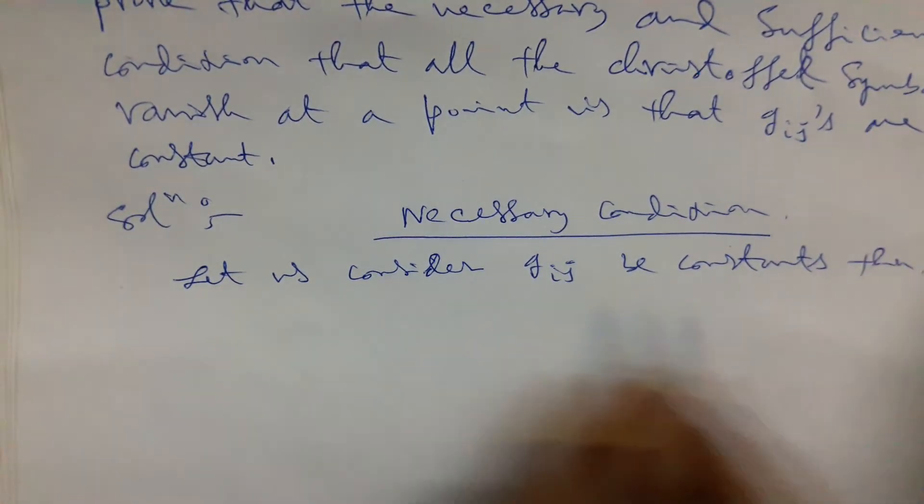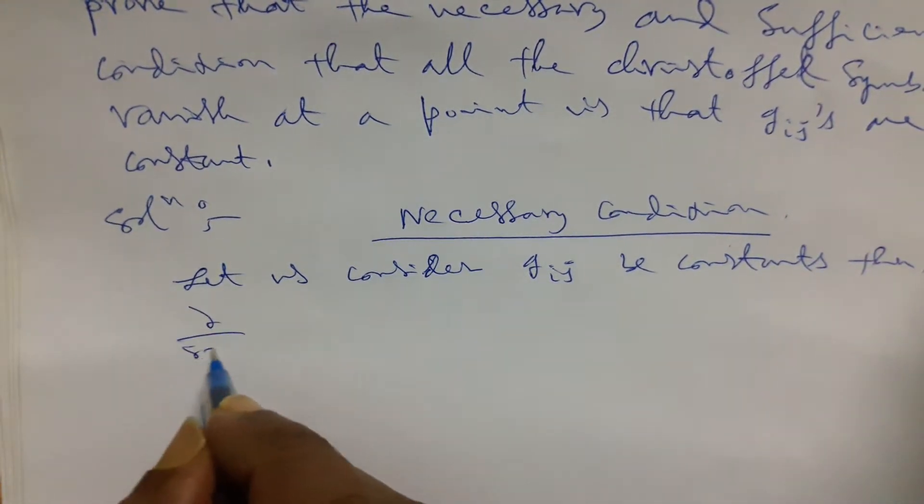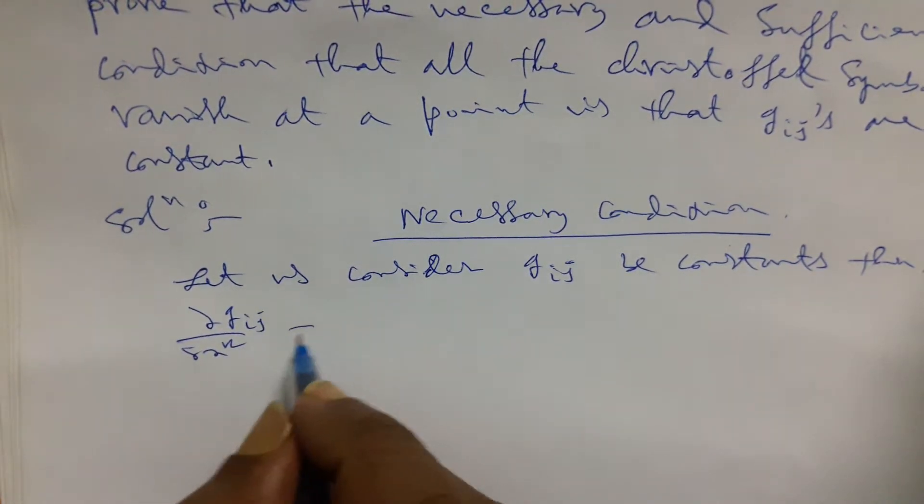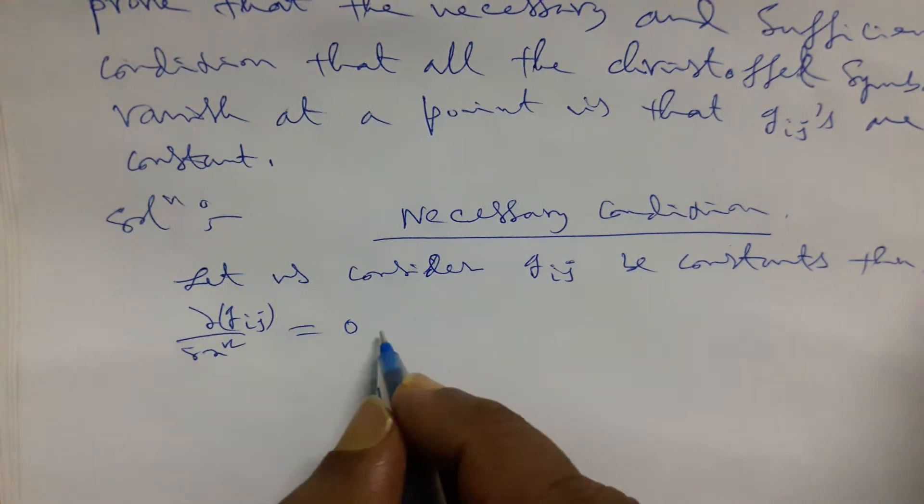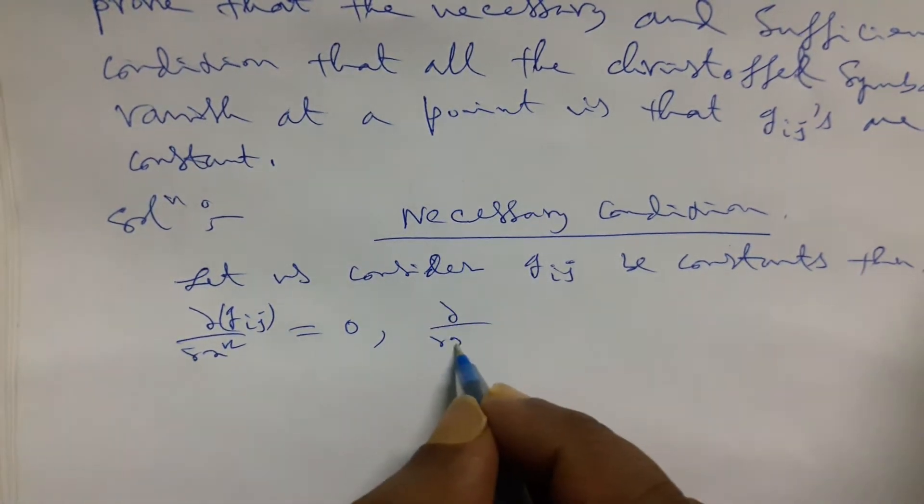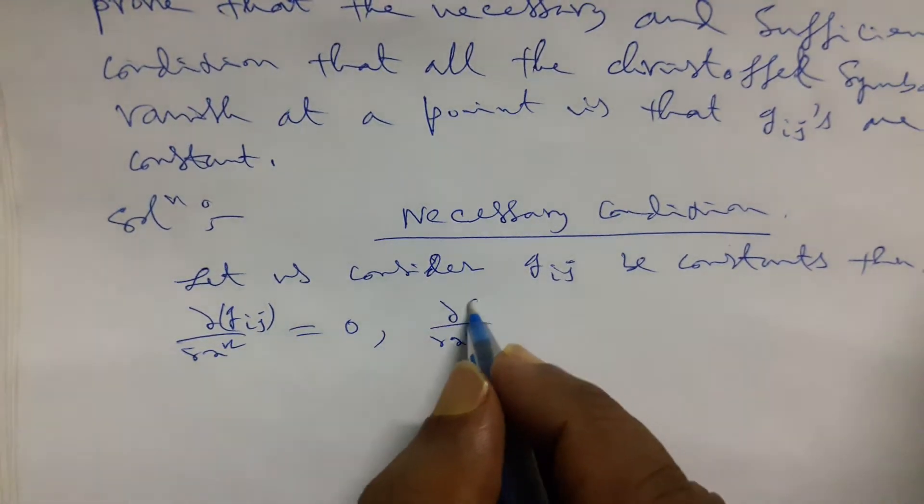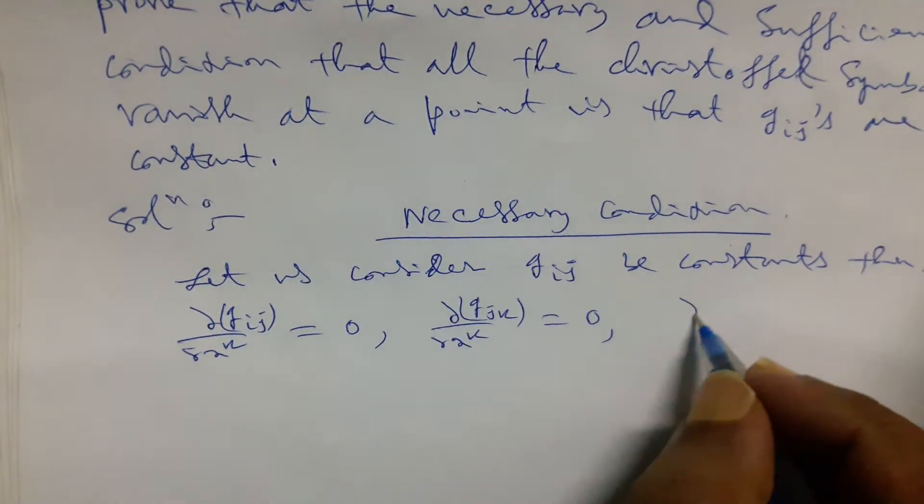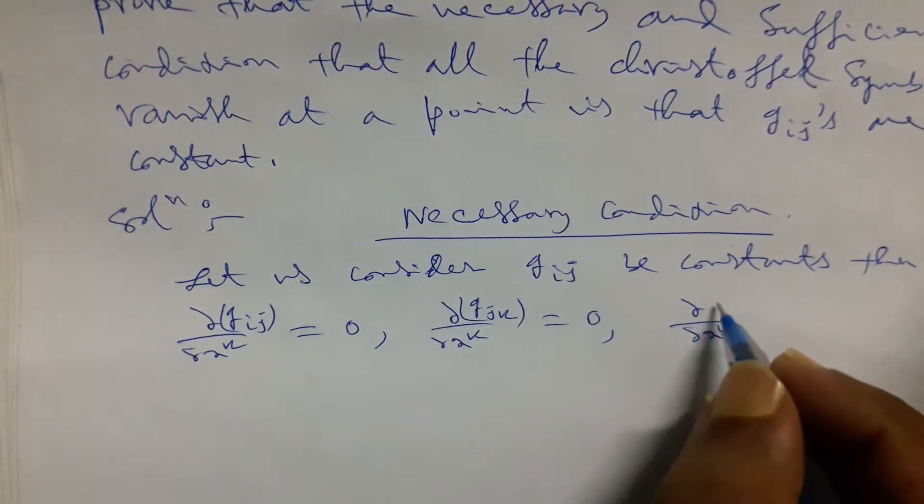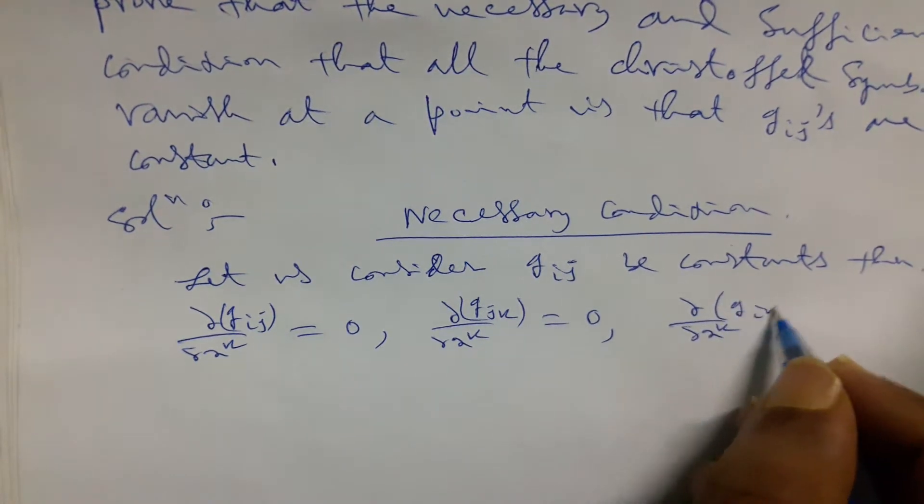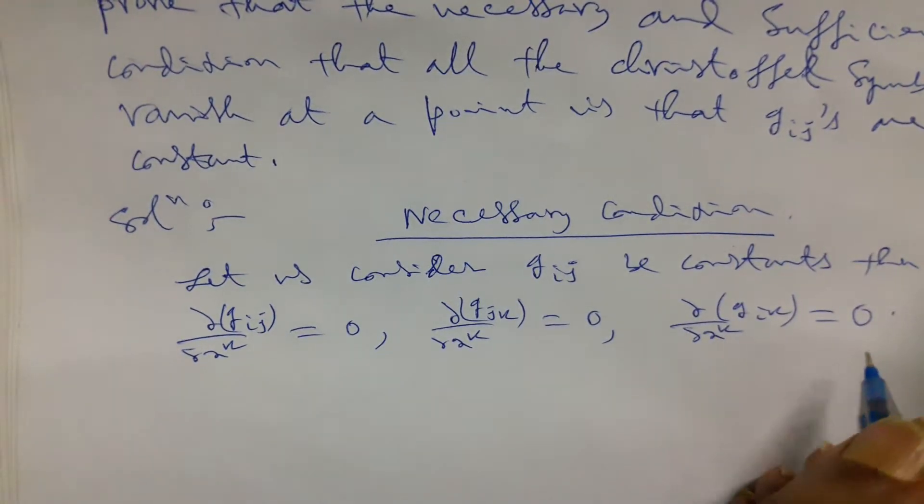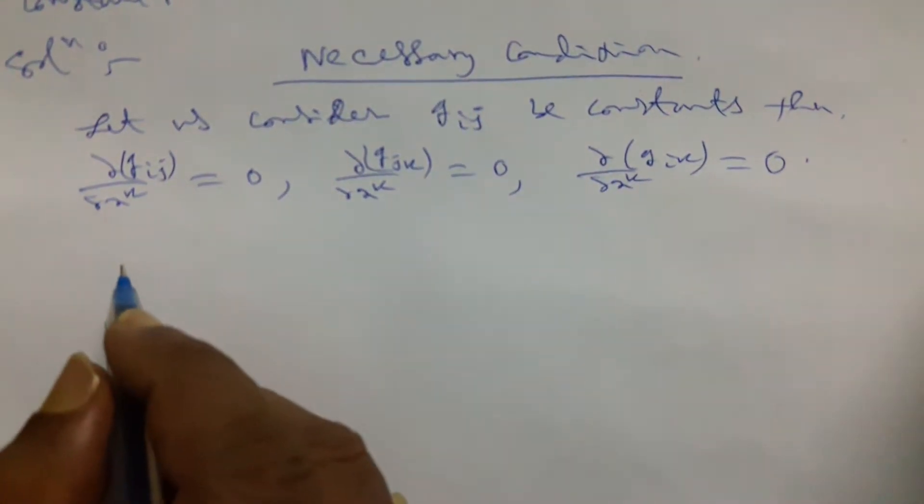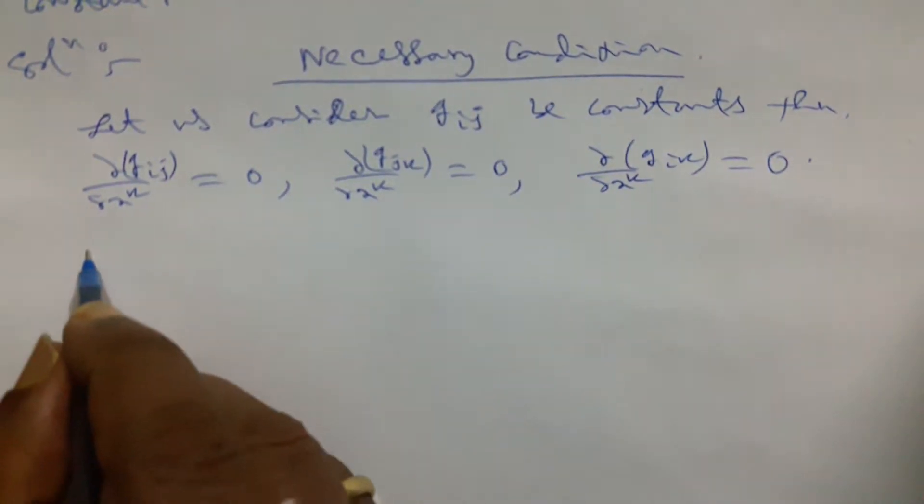Then we have del/del xk of Gij, that will be 0. And del/del xk of Gjk, that will also be 0. And del/del xk of Gijs is also 0.